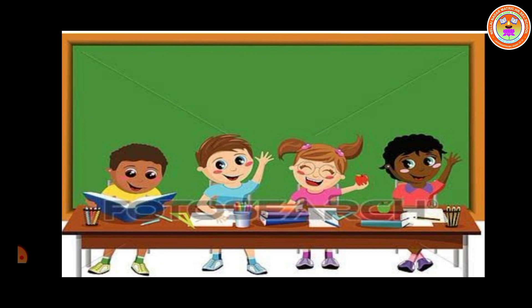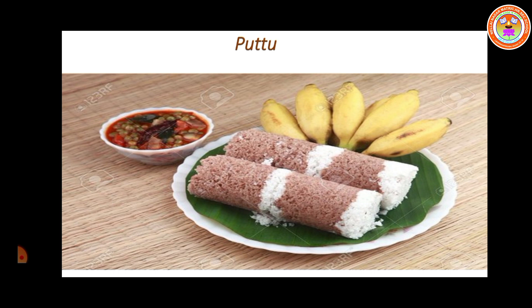Children, look at this picture. This is a classroom picture with four children. Do you think all of them look similar? No. Student 1 is from Kerala. He is fond of eating puttu and speaks Malayalam. Student 2 is a Muslim student who speaks Urdu and likes to eat biryani.